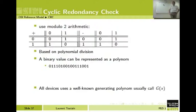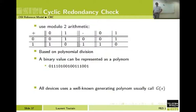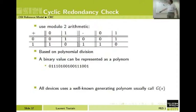We can do the same for subtraction. 0 minus 0 is 0. 0 minus 1 is 1. 1 minus 0 is 1. 1 minus 1 is 0. So plus and minus give the same result in modulo 2 arithmetic.